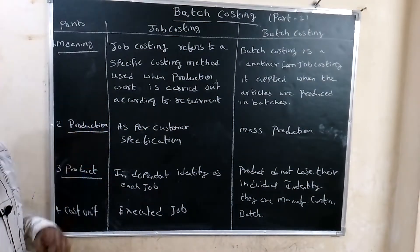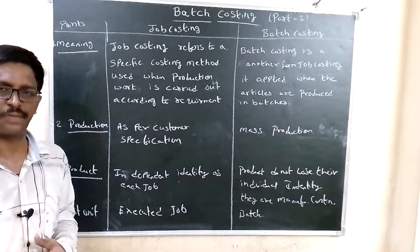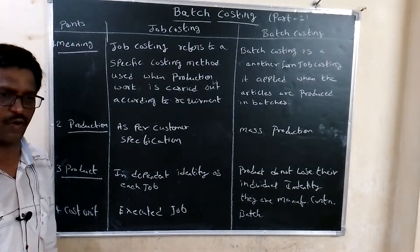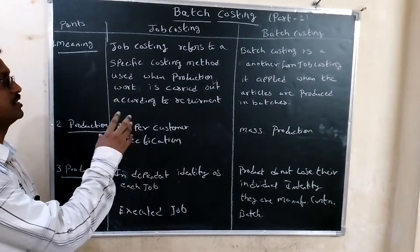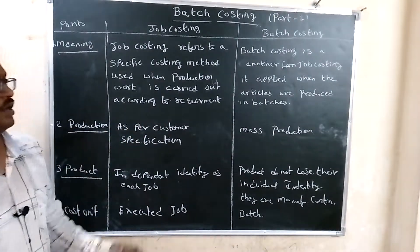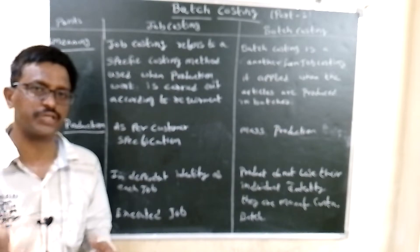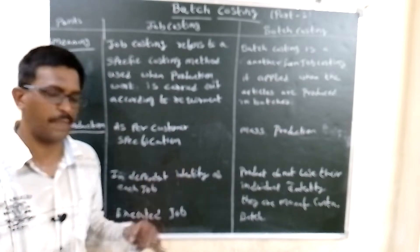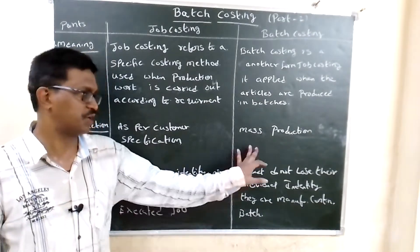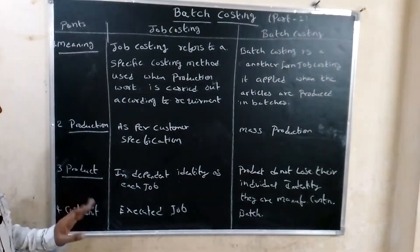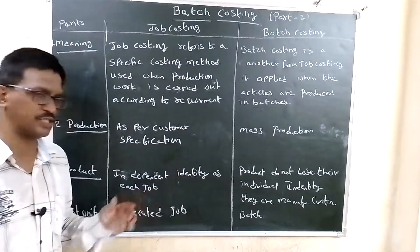Regarding production: in job costing, production is done according to the customer's specification. In batch costing, goods are produced in mass quantities — large quantities are produced batch-wise.